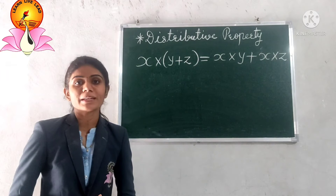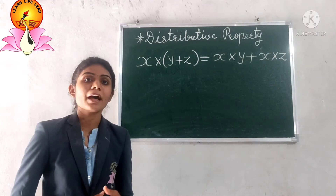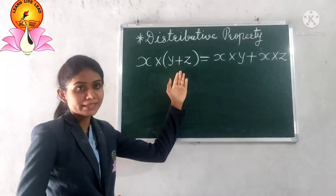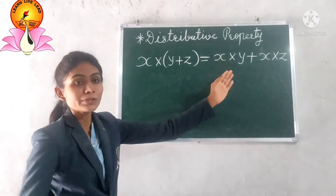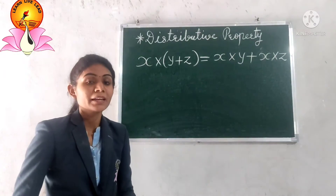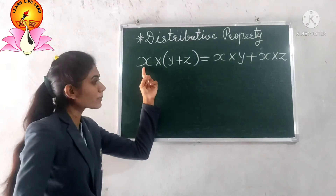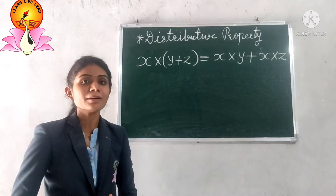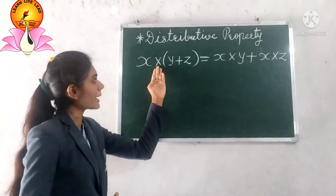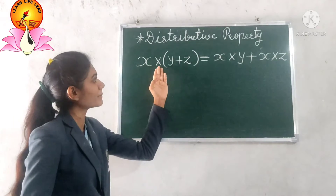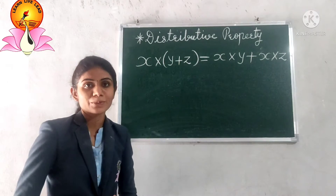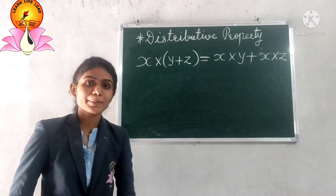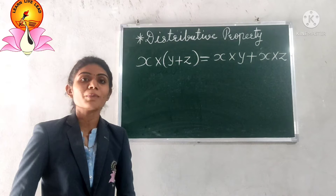Next, the distributive property. If x, y, z are three whole numbers, then x × (y + z) = x × y + x × z. This means the x outside the bracket is distributed to every number inside the bracket — x is multiplied to y as well as x is multiplied to z. That is why the distributive property is applicable for multiplication of whole numbers.